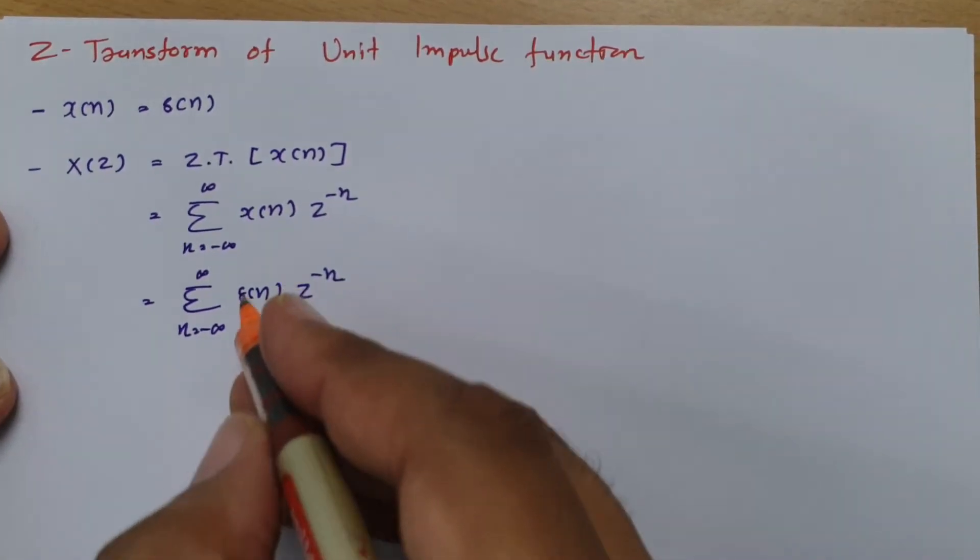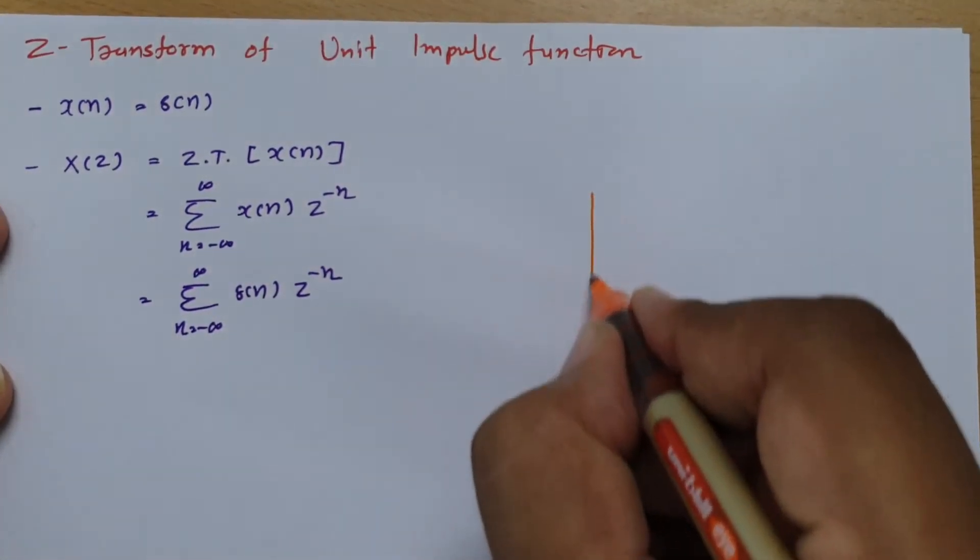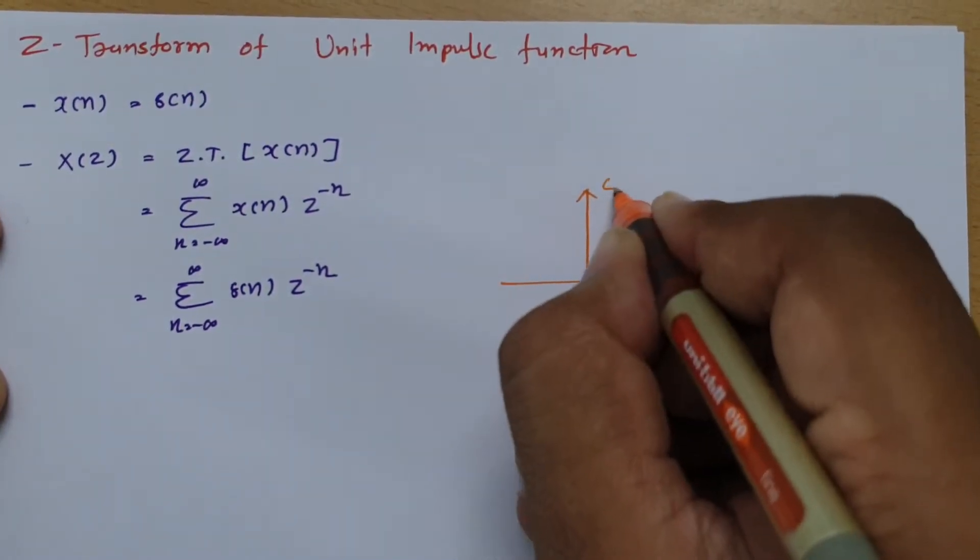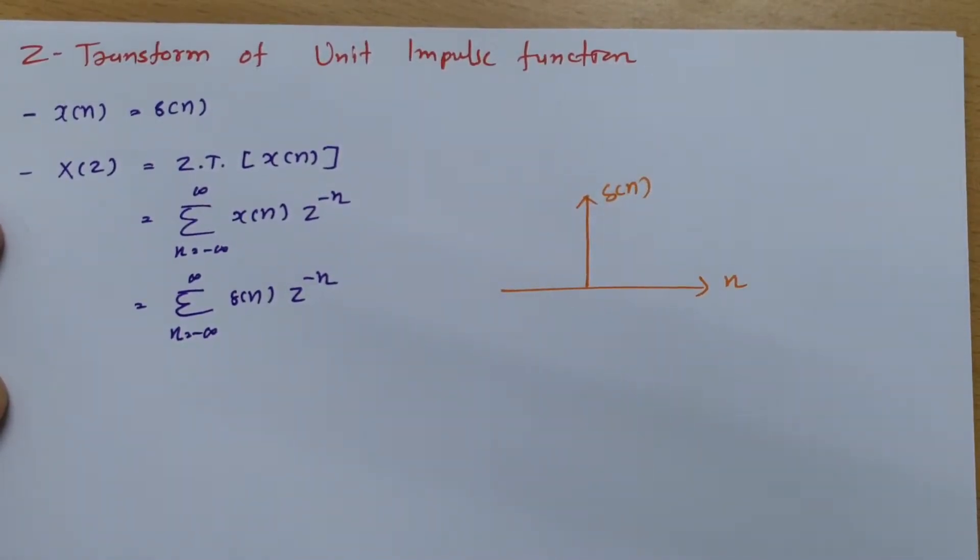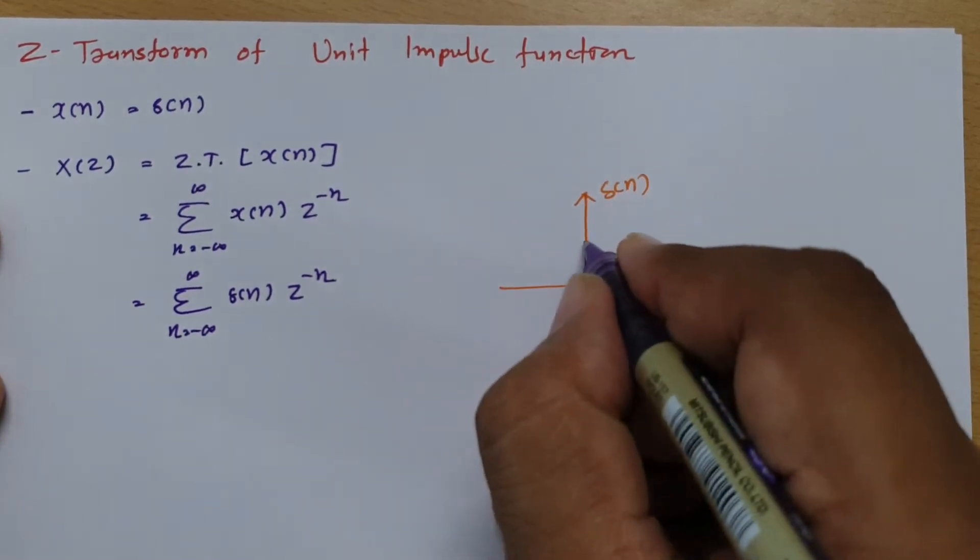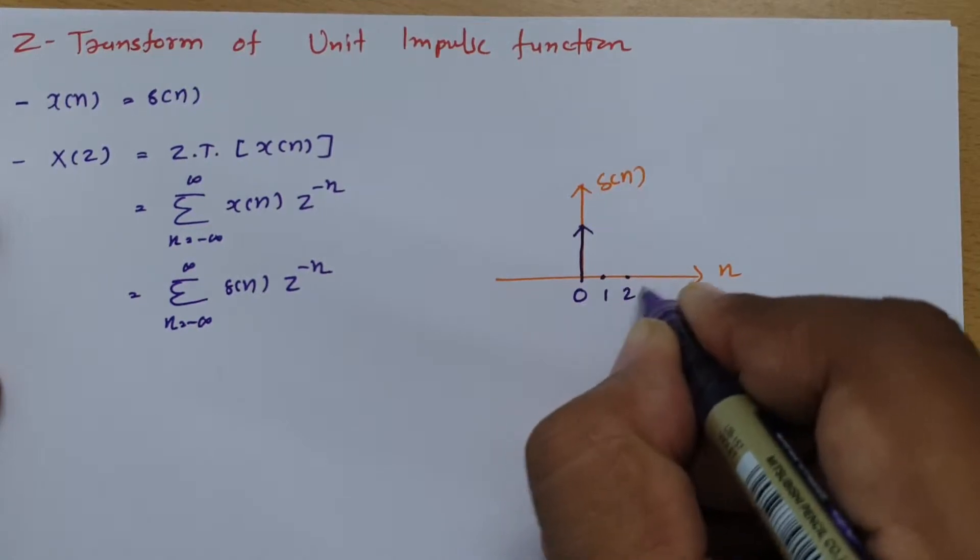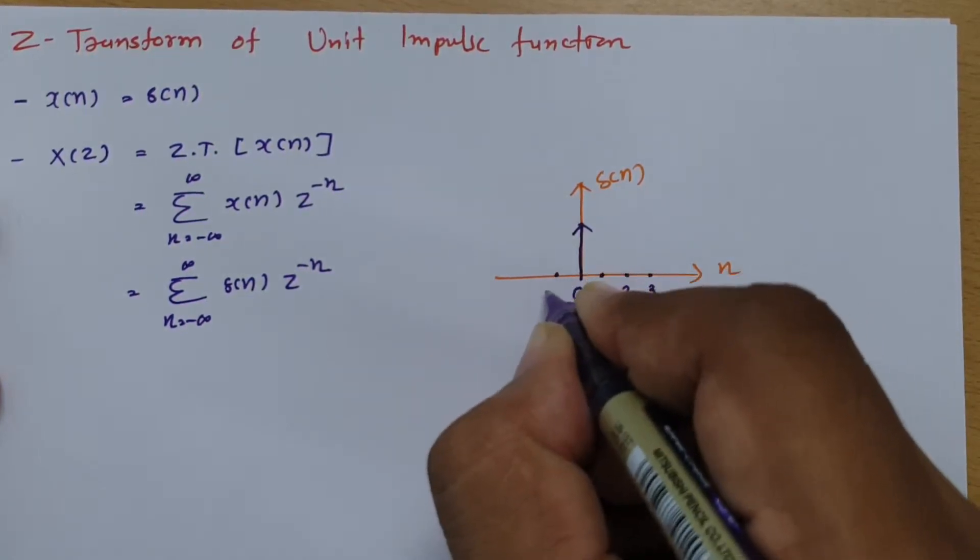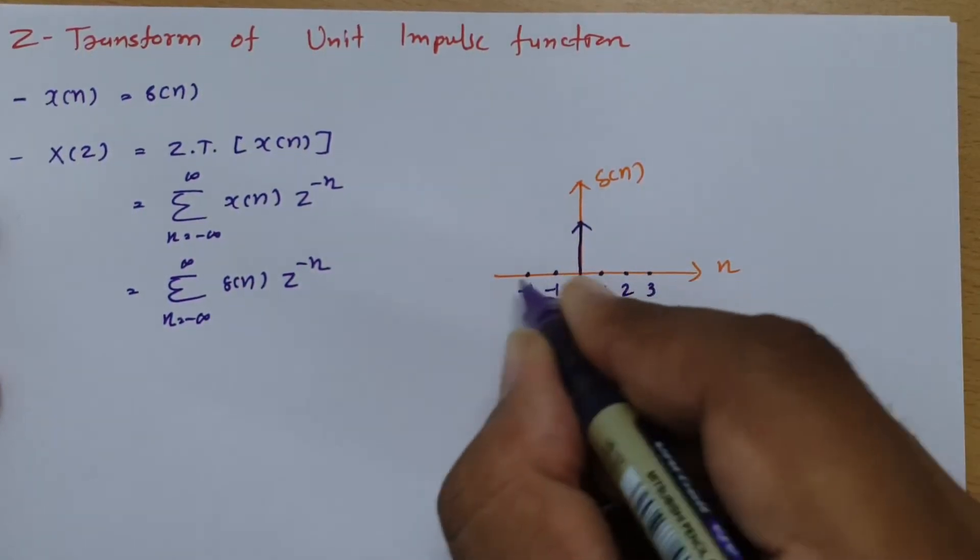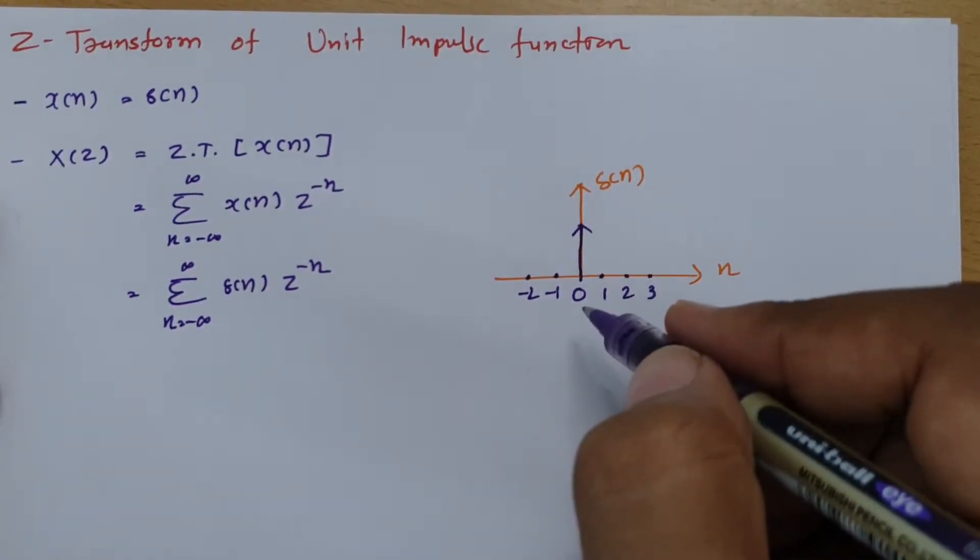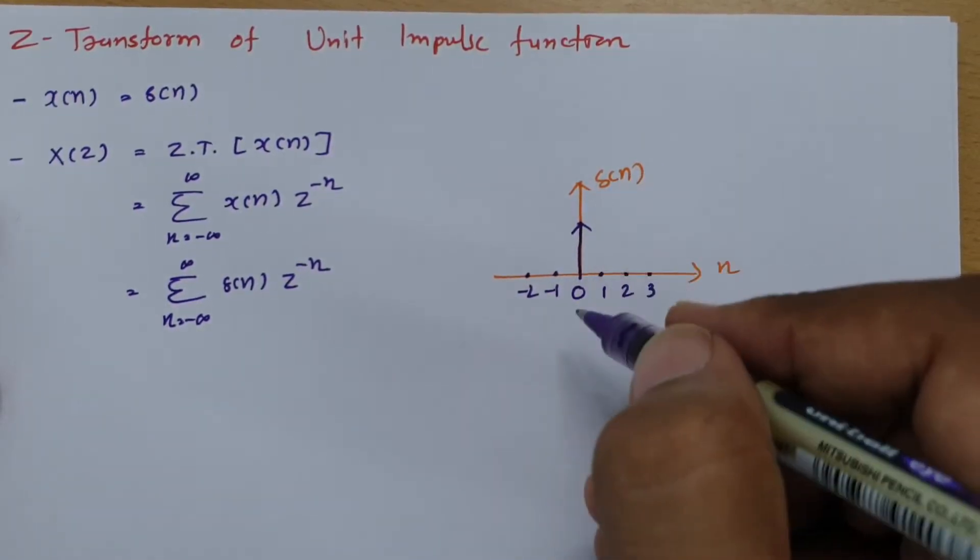Now, if you observe what the impulse function is, in the impulse function you will observe there's a sample at the origin only. For other values, the value is zero. So the impulse is happening at n equals zero; for other values it is zero.